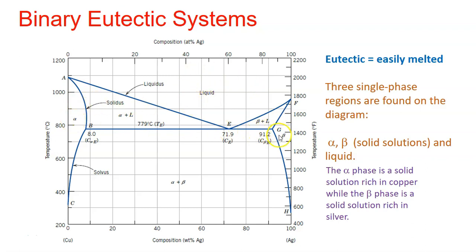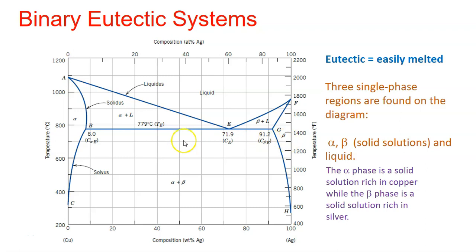The alpha region and the beta region are solid solutions, and the liquid is just liquid. The alpha phase here is a solid solution which is rich in copper — so here is 100% copper and here is 100% silver. The beta phase is a solid solution which is rich in silver. This alpha and beta region can also be considered as pure copper and pure silver regions.